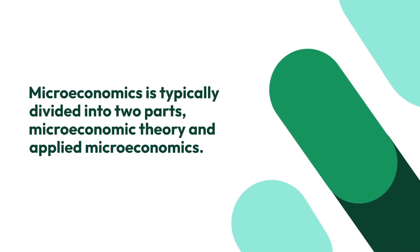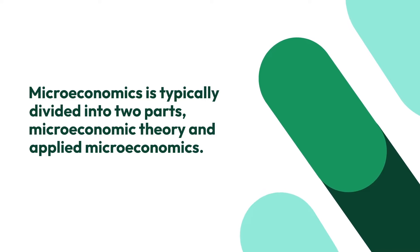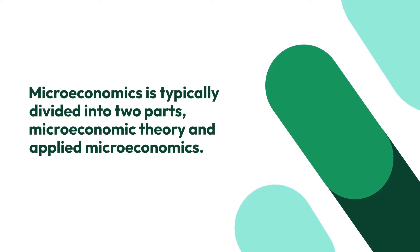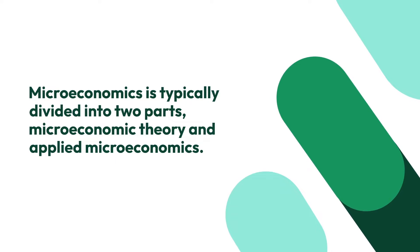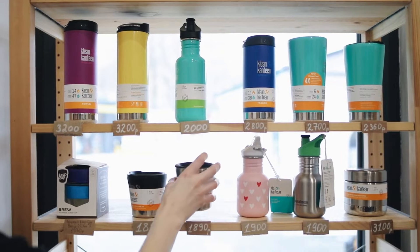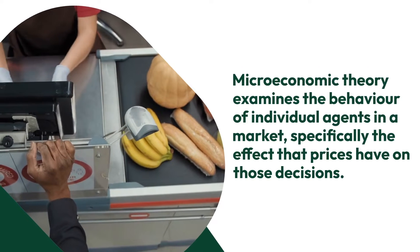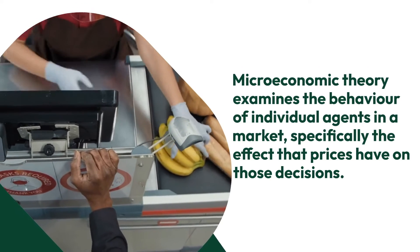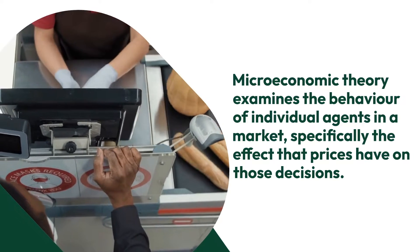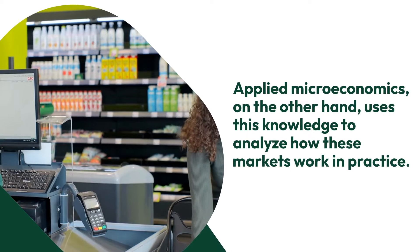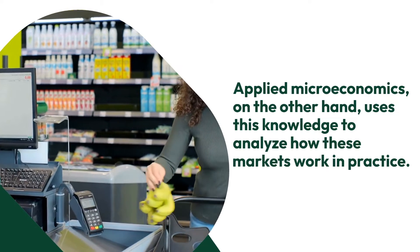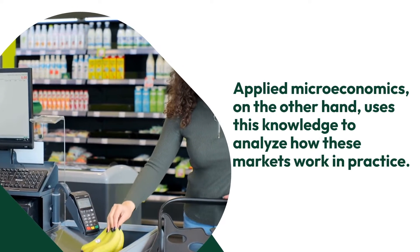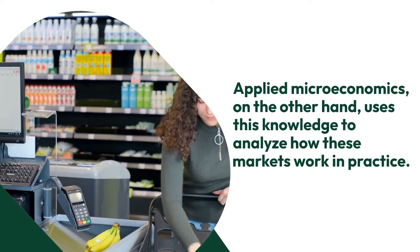Microeconomics is typically divided into two parts: microeconomic theory and applied microeconomics. Microeconomic theory examines the behavior of individual agents in a market, specifically the effect that prices have on those decisions. Applied microeconomics, on the other hand, uses this knowledge to analyze how these markets work in practice.